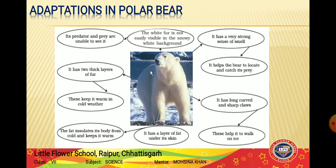Polar bears have long, curved, and sharp claws - claws meaning the nails on their paws. These long curved sharp claws help them walk on ice. They also have wide and large paws to help them walk on the ice.